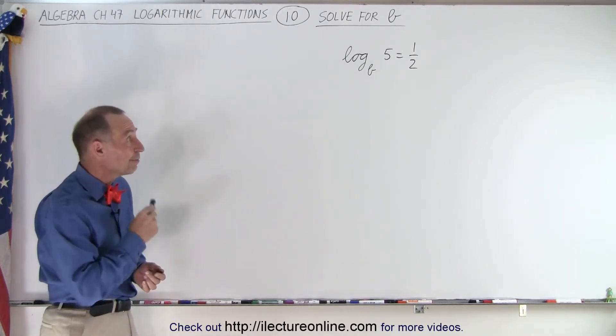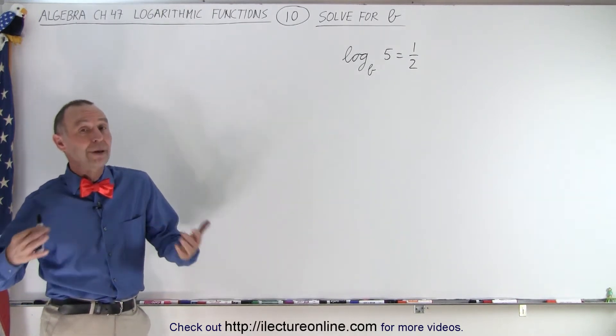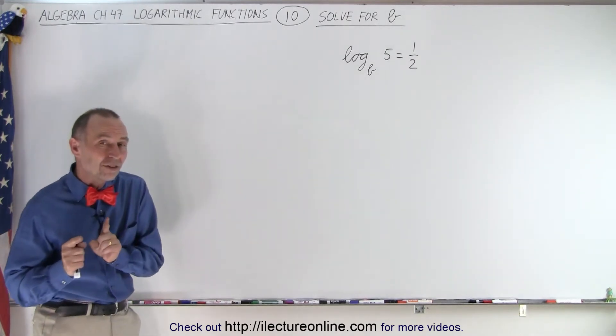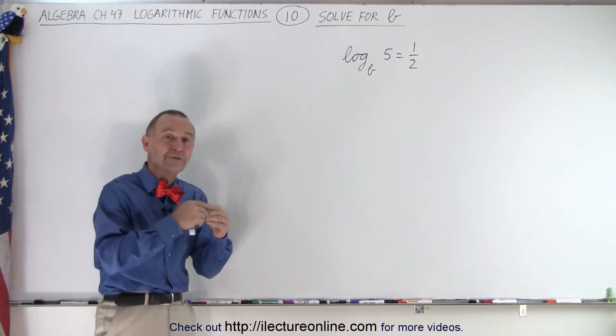So log base b of 5 equals 1 half, so what's the base of that logarithmic function? Since it is in logarithmic form, we want to convert it to exponential form by using the antilog technique.